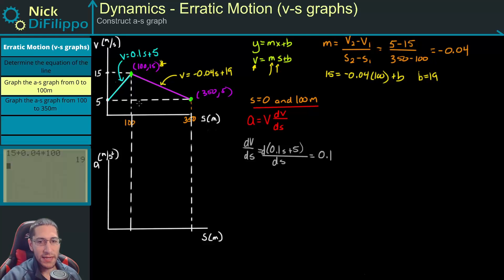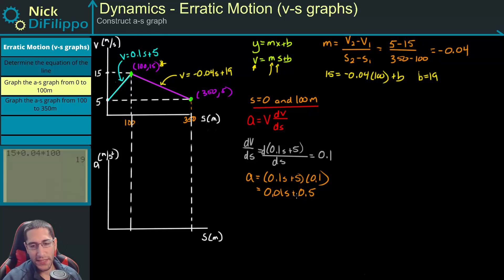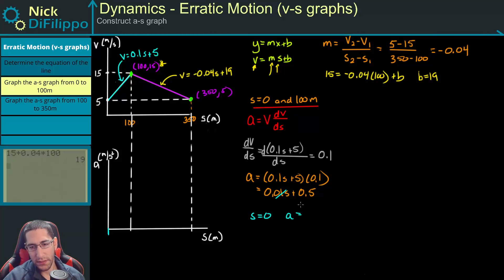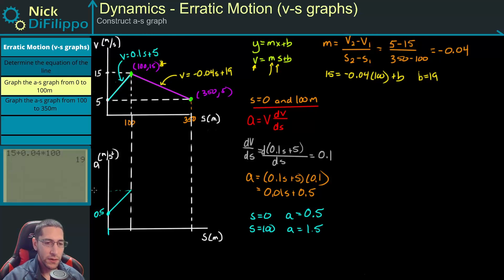Now I have everything I need. Acceleration equals the velocity (0.1s plus 5) times 0.1, which equals 0.01s plus 0.5. This is a linear expression. At s equals 0, the acceleration equals 0.5, and at s equals 100, this becomes 1 plus 0.5, so acceleration equals 1.5. It's a straight line from 0.5 to 1.5.